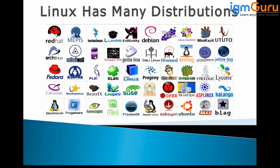People are already using flavors like Red Hat, Sun Solaris, and HP Unix. Now there are so many other flavors also in the market. Ubuntu is one of the topmost flavors people are using today.